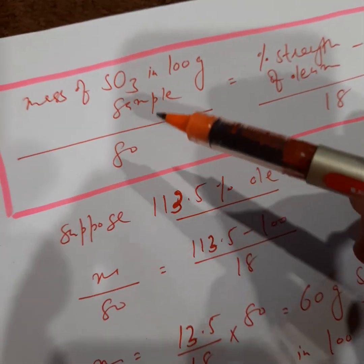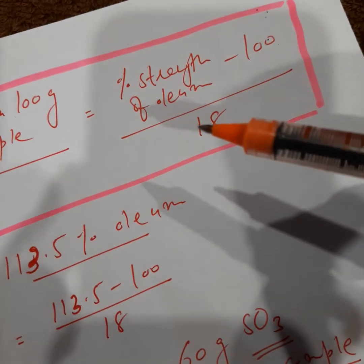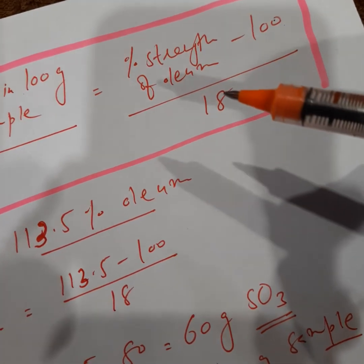Now the left part of this equation represents the number of moles of SO3 as you must have understood, and the right side of the equation represents number of moles of water required as you can easily understand.